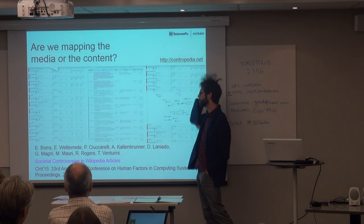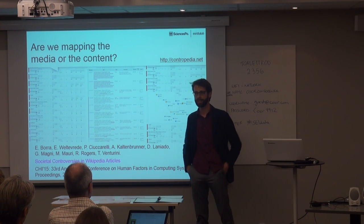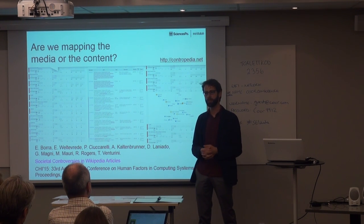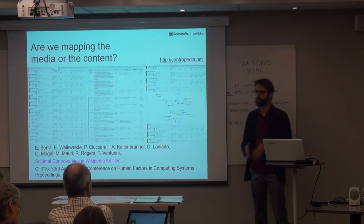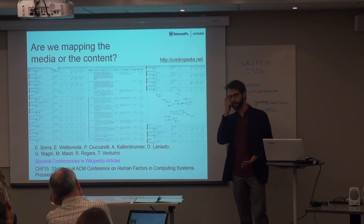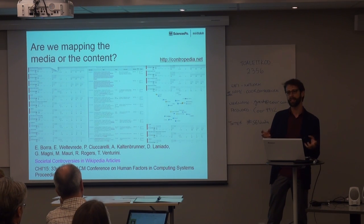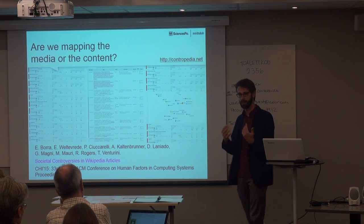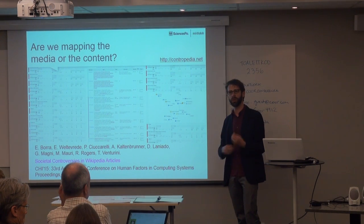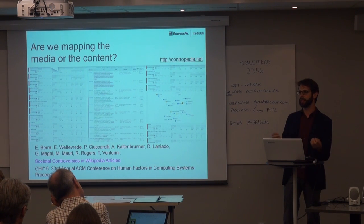Another example we are working on is a project called Contropedia, where we use data on Wikipedia edits to detect controversial topics. Basically, when we see pages that are very much reverted by different people, we take that as an indicator of controversy or debate. But we are very aware that all the time there's the question: what are we mapping here? Are we seeing the media or the content? Are we seeing some societal debate or something about Wikipedia? Are we learning something about society or about Wikipedia? And often we are learning more about Wikipedia than about society.